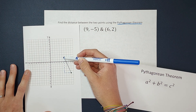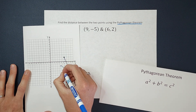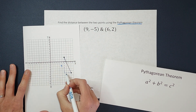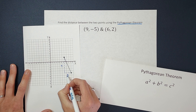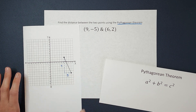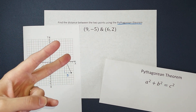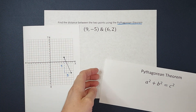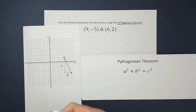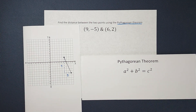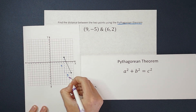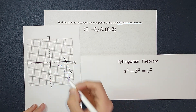I can just count it. From here to here, that is a distance of 7, and from here to here, that is a distance of 3. You can just count it out. So now I have a right triangle where I know two of the sides. I'm going to label these: 3 as a and 7 as b.